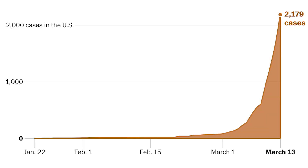I want to demonstrate this by swinging you over to the set of graphics generated by the Washington Post. I'll link this article in the description in case you want to check it out after the video. First things first, you'll see that the growth of the virus in the US has been exponential. We started at one not too long ago, and we've already made our way to 2,200 cases as of March 13th. And this is only the confirmed cases.